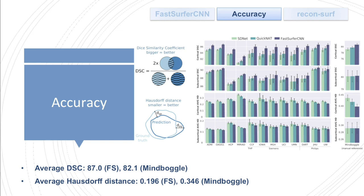Here we compare the DICE score as well as the Hausdorff distance for the cortical and the subcortical structures — the cortical is always on top. Compared to other deep learning architectures, FastSurfer CNN, depicted in dark blue, reaches a higher DICE score both for the cortical as well as the subcortical structures, and a lower average Hausdorff distance, again for both structure types.